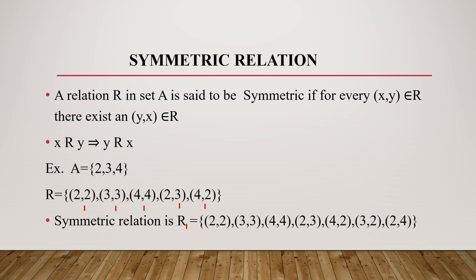We add (3,2) and (2,4) to the relation. So (2,3) and (3,2) are both there, and (4,2) and (2,4) are both there. That confirms this is a symmetric relation — for every (x,y), (y,x) is also present.